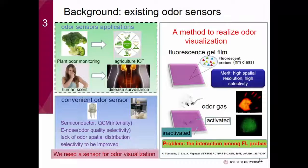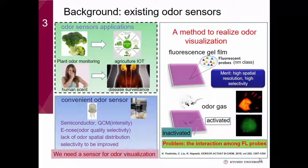Nowadays, we apply odor sensors to detect plant odors in IoT agriculture, and also can detect human scents to find our easy path. Semiconductor and QCM gas sensors are good at odor intensity detection, and electronic nose has the ability of odor quality selectivity. But all of these sensors lack odor spatial resolution, and their selectivity needs to be improved.